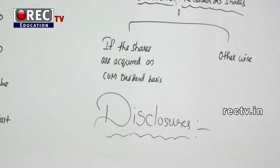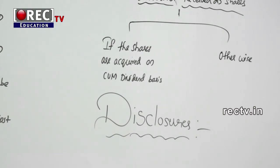The last concept is disclosures under AS 13. Entities must disclose in financial statements: the accounting policy, gross income received or receivable included in P&L, profit or loss on sale of current or long-term investments, and adjustments to carrying amount of investment. Entities should also disclose quoted and unquoted investments separately and disclose the market value of quoted investments, irrespective of classification as long-term or current.